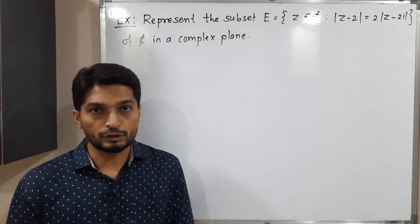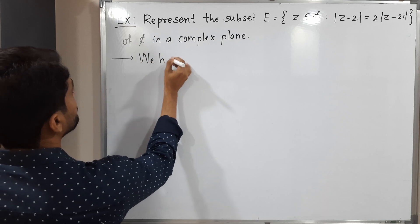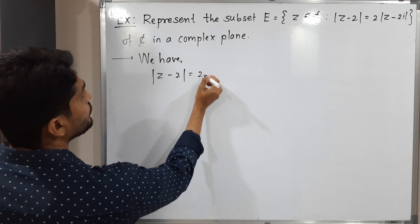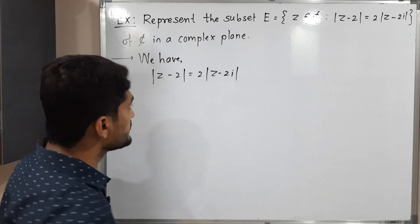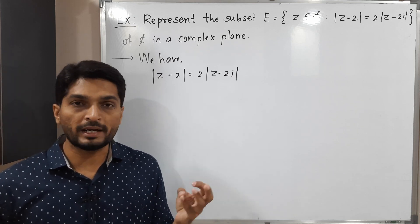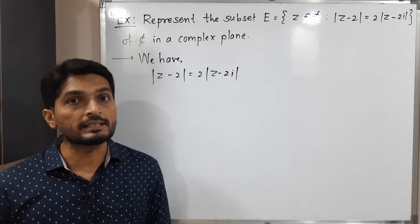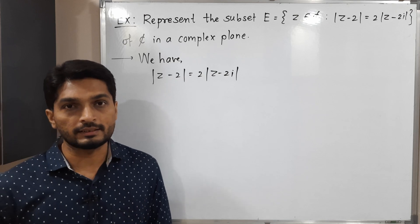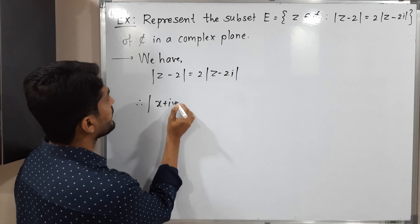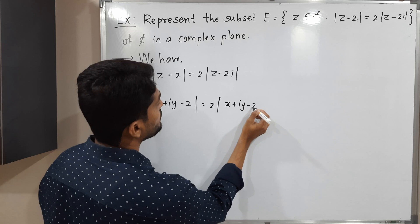Let us start with that condition. We have mod Z minus 2 is equal to 2 mod Z minus 2i. Any complex number can be expressed in three different ways: Cartesian form, polar form, and exponential form. Here I am going to use Cartesian form, which means I am going to replace Z by X plus iy. So let Z equal X plus iy. Therefore mod of (X plus iy minus 2) is equal to 2 mod of (X plus iy minus 2i).